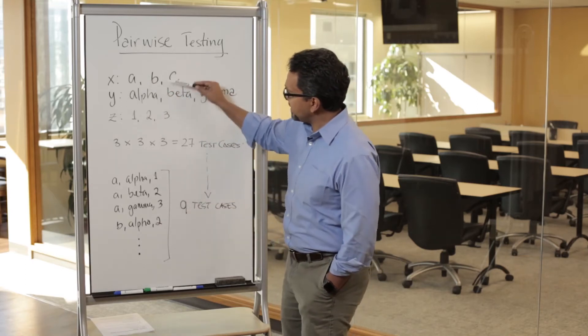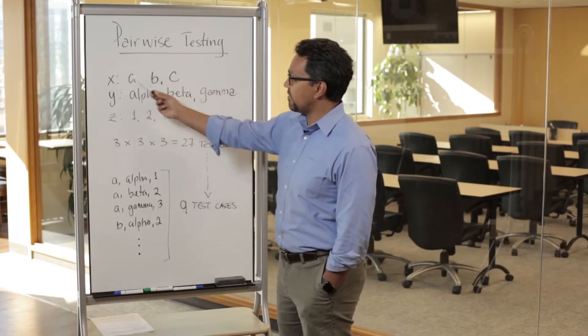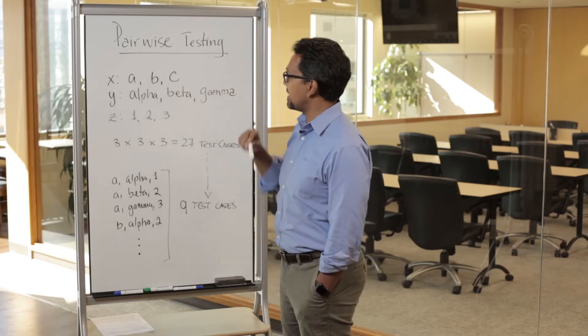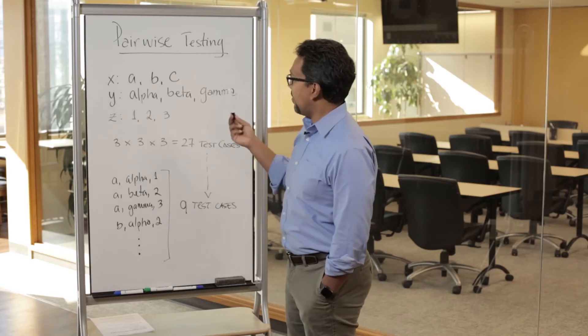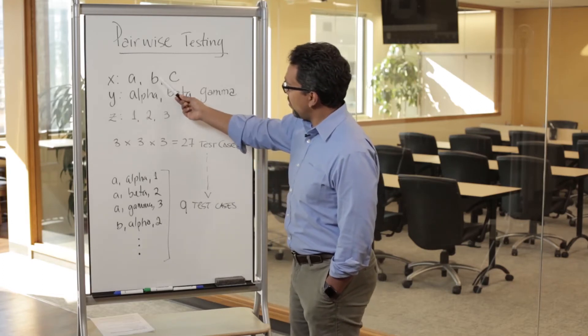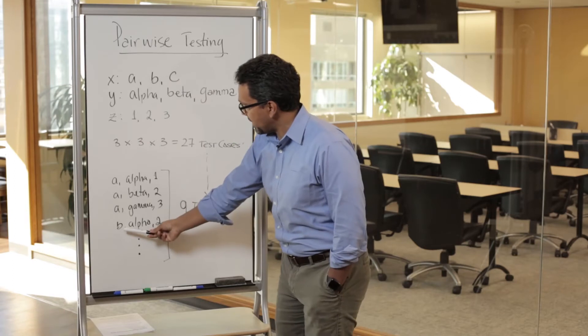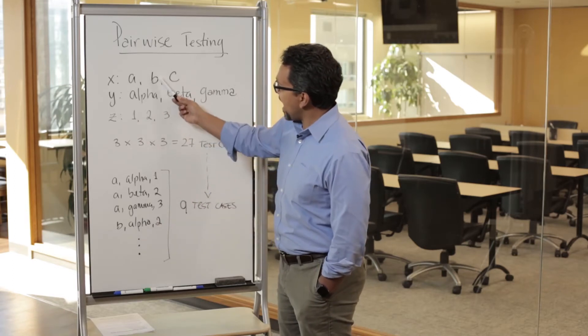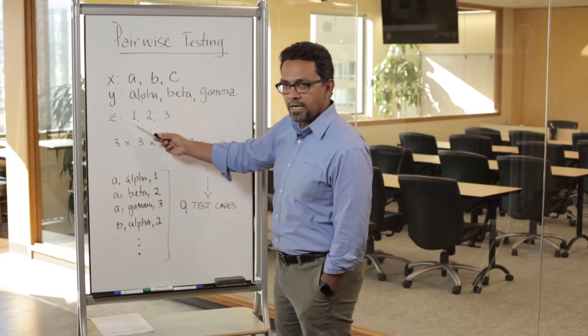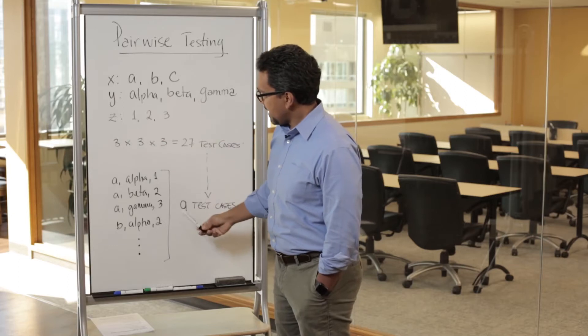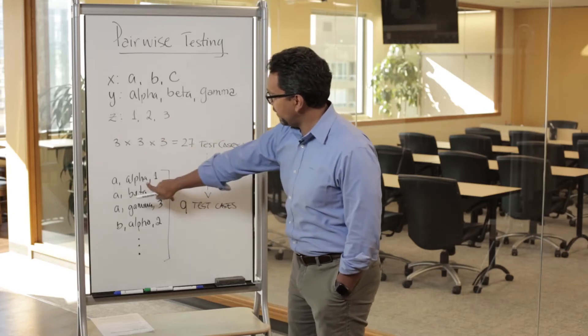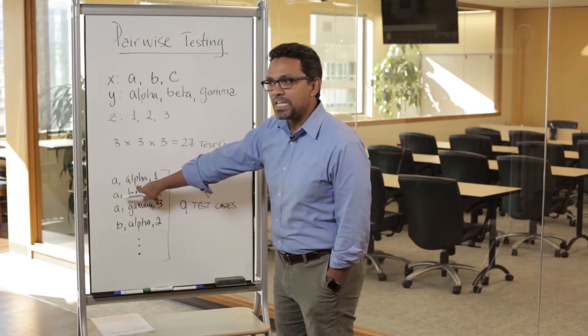And now we're going to be combining B alpha. I cannot have B, alpha, and one because that is already being tested—alpha and one is already taken. So I don't need to test that one again, so I just need to have another pair that I haven't tested. That's why I'm saying B, alpha, and two.